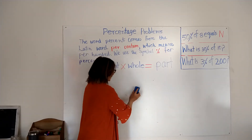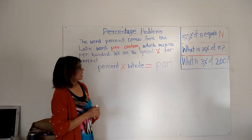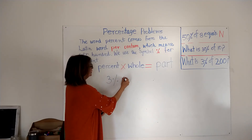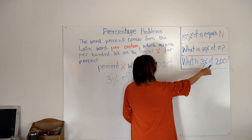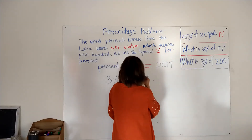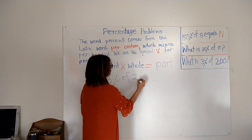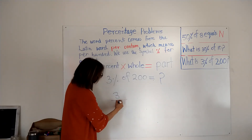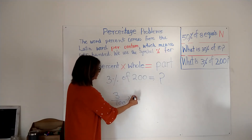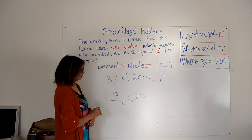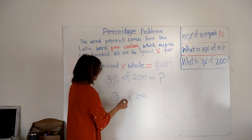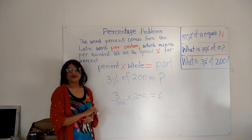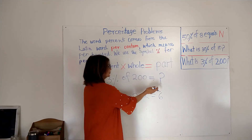Okay, the last one — see how simple that is? I love this method, it's very simple and clear. What is 3 percent of 200? Our whole is 200 and the part is missing — question mark. So: 3 out of 100, times 200. Cancel zeros with zeros. We have 3 times 2, which equals 6. Six is our answer — six is the part.